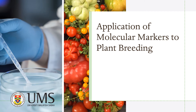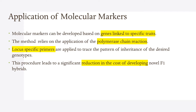Greetings and welcome to this module on the application of molecular markers to plant breeding. In this module I will discuss the application of DNA based molecular markers for the selection of plant hybrids with the desired phenotype and the desired genotype. The application of molecular markers is based on the selection of specific loci or genes linked to specific traits, and can be developed based on genes linked to those traits. The method relies on the polymerase chain reaction, where locus-specific primers are applied to trace the pattern of inheritance of desired genotypes, leading to a significant reduction in the cost of developing novel F1 hybrids.